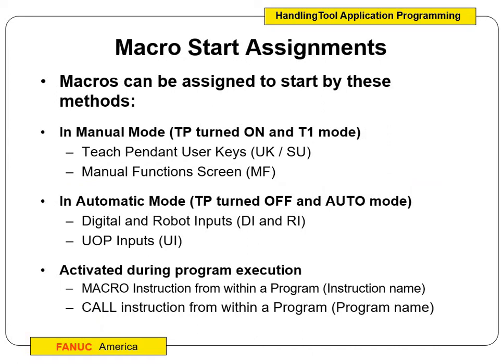Macros can be assigned to start by three different methods. In manual mode, the teach pendant has to be turned on and the key turned to T1 mode. In automatic mode, where the teach pendant is off and we're in auto mode, it's tied to our digital and robot inputs. We can also have a macro activated during a program — for example, if you're moving to pick up a part and need the grippers to open or close, the grippers are a macro you can call out mid-program. Because it's commonly used, we want it to be global so we can open and close grippers in any program.